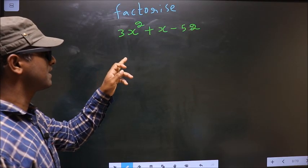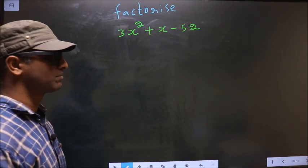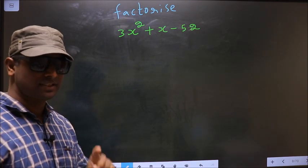Factorize 3x² + x - 52. To factorize, step 1: